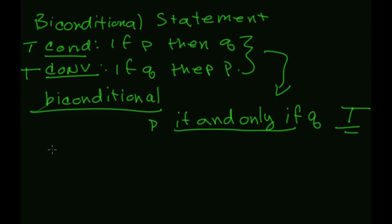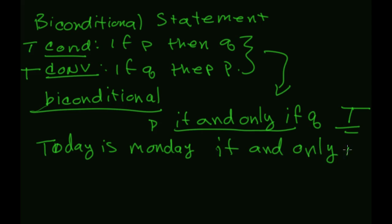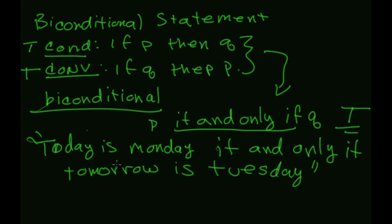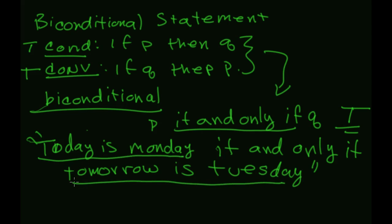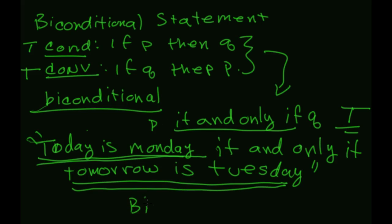Something we said earlier that can be written as a biconditional: 'Today is Monday if and only if tomorrow is Tuesday.' This is a true biconditional statement because we can say 'if today is Monday then tomorrow is Tuesday,' and we can also say 'if tomorrow is Tuesday then today is Monday.' We have both the conditional and its converse, so the biconditional is true.